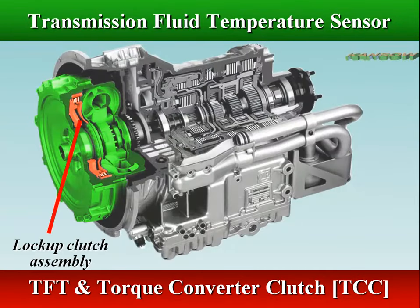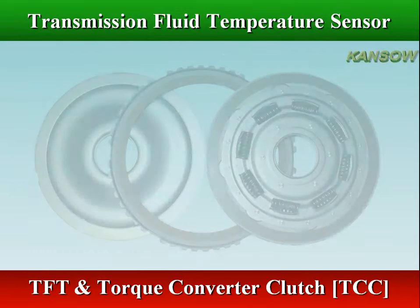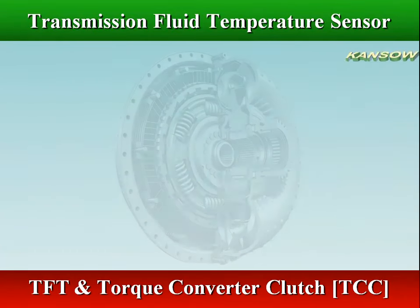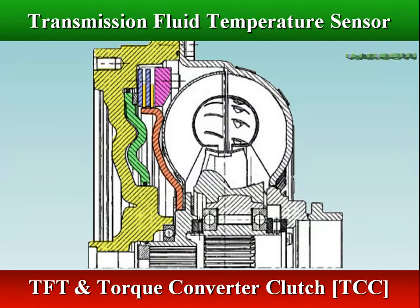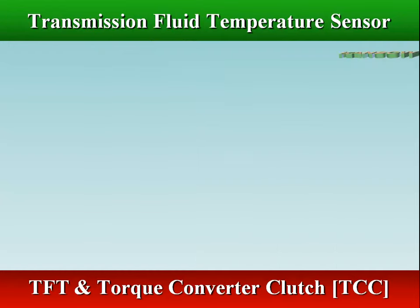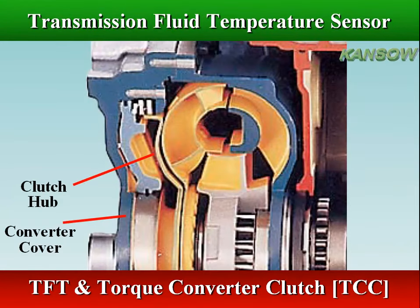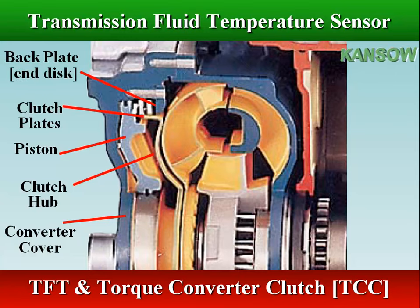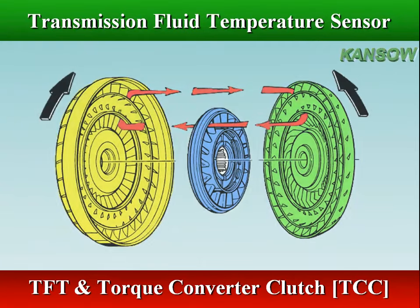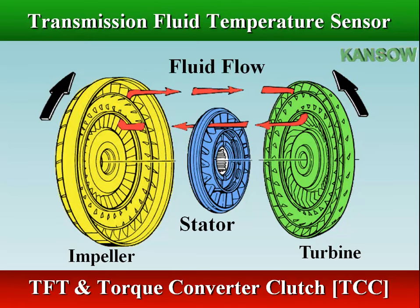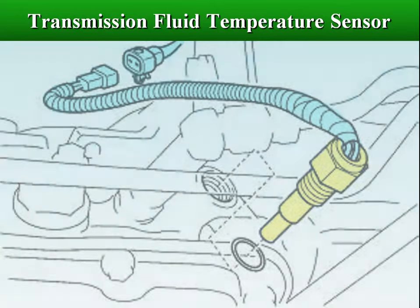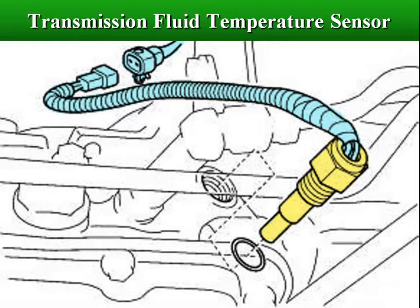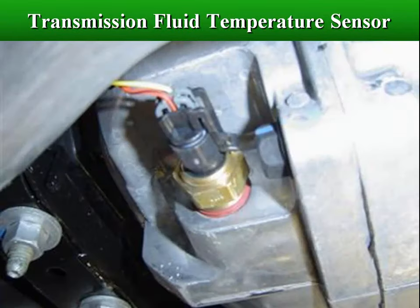The transmission fluid temperature sensor provides over-temperature protection by locking the torque converter clutch (TCC). The TCM engages the TCC mechanically, connecting the input shaft to the engine to cool the fluid if it gets too hot. When the fluid temperature is cold, the TCM delays torque converter clutch engagement until the fluid reaches a specific temperature. The transmission fluid temperature sensor is located in the valve body or oil pan of the transmission or transaxle.